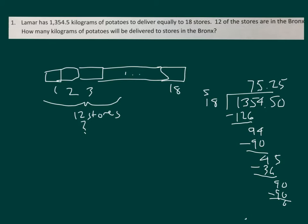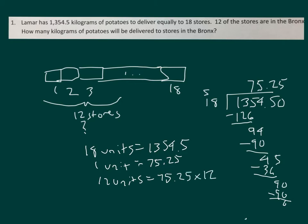Now I have to figure out how much 12 is worth. So I had 18 units, equaling 1,354.5. I had 1 unit equals 75.25. And I want to find out 12 units, which is 75.25 times 12. Do that work for your problem set? Those are the amount of potatoes that will be delivered to the Bronx when you figure this out.